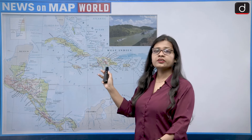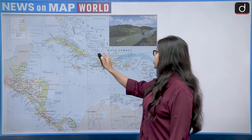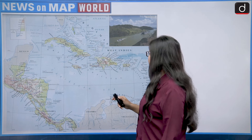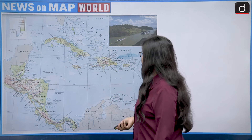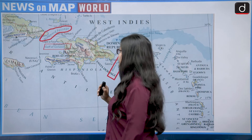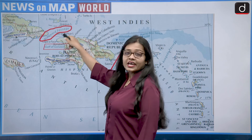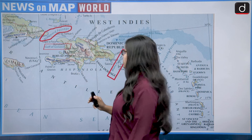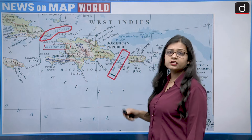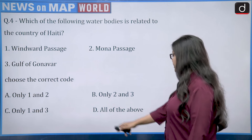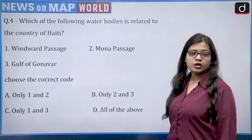Haiti lies in the Greater Antilles on the island of Hispaniola, with the Dominican Republic on the other side. Looking at the map: Windward Passage lies to the north of Haiti, the Gulf of Gonave lies to its northwest, and Mona Passage lies to its east. All three water bodies are related to Haiti, so the correct answer is Option D — all of the above.